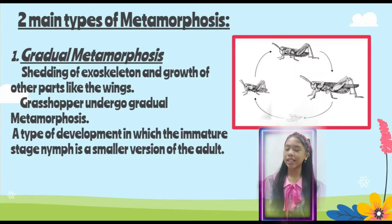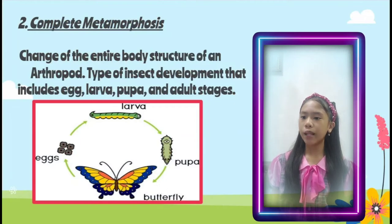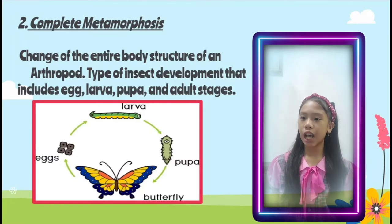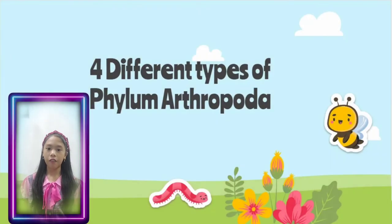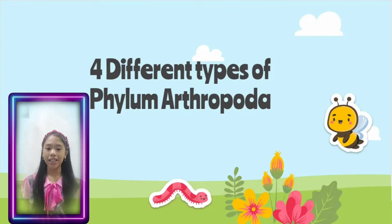The second type is complete metamorphosis, which involves changes to the entire body structure of an arthropod. It includes four stages: egg, larva, pupa, and adult. There are four different classes of phylum arthropoda: class Insecta, class Arachnida, class Crustaceans, and class Myriapoda.